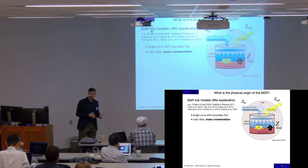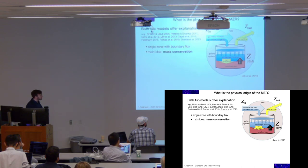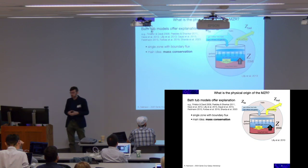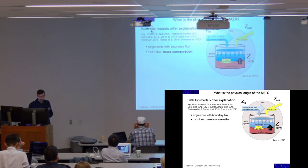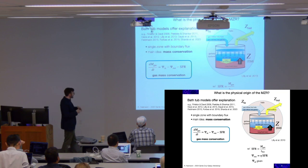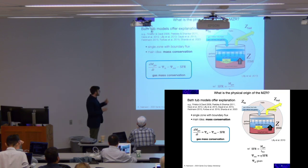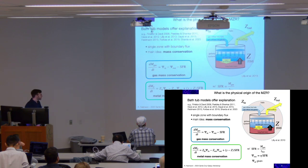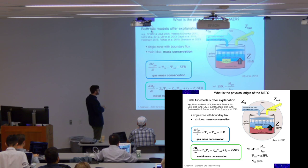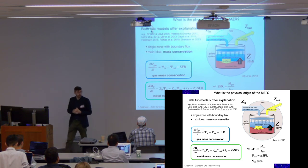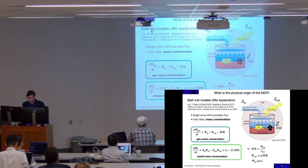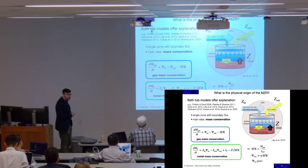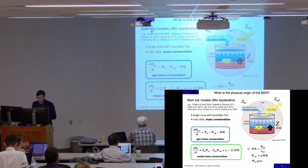Bathtub models offer a very nice explanation of where the mass-metallicity relation comes from. The basic idea is that you model the galaxy as a single zone with a boundary flux, and then use the idea of mass conservation. We have two masses to conserve. The first is the gas mass — the change in the gas mass in this zone is given by the difference between inflow, outflow, and star formation rate. The other mass conserved is the metal mass, and you end up with a very similar equation. You multiply the inflows and outflows by the metallicity of the inflows and outflows respectively, plus a term related to metal production in supernovae.